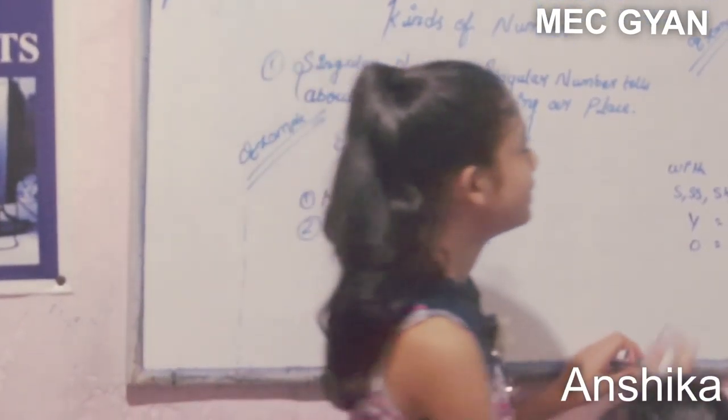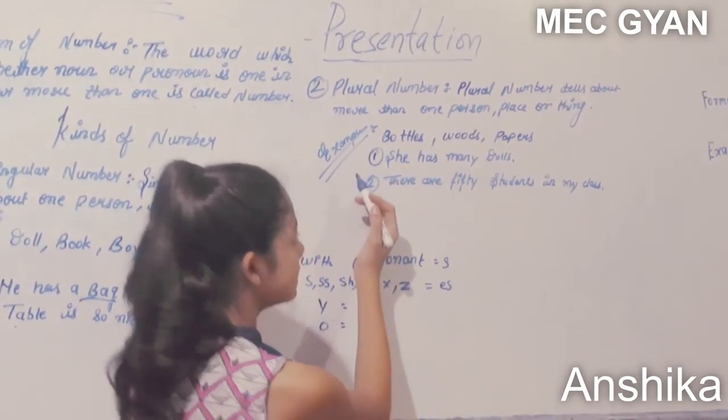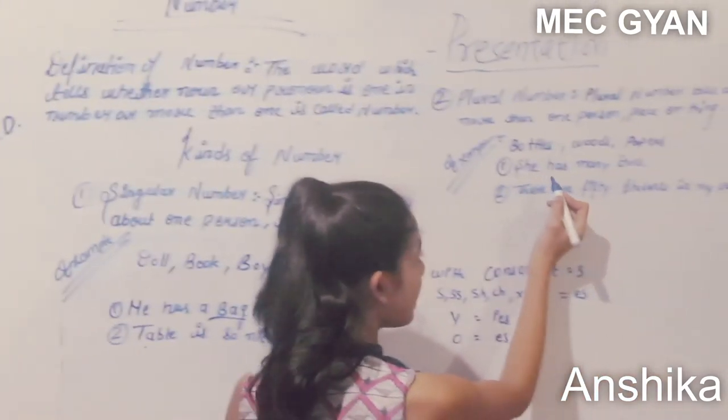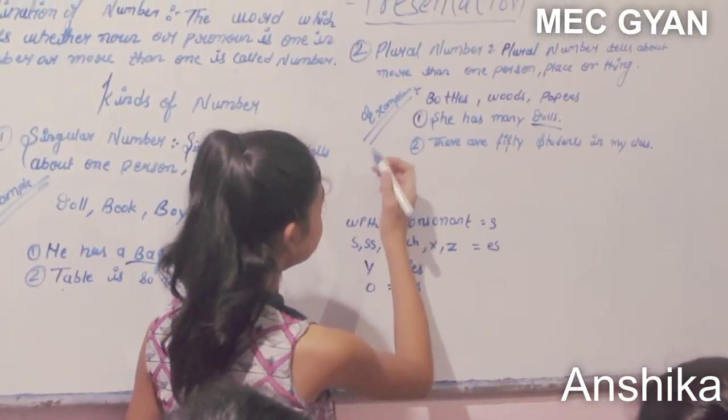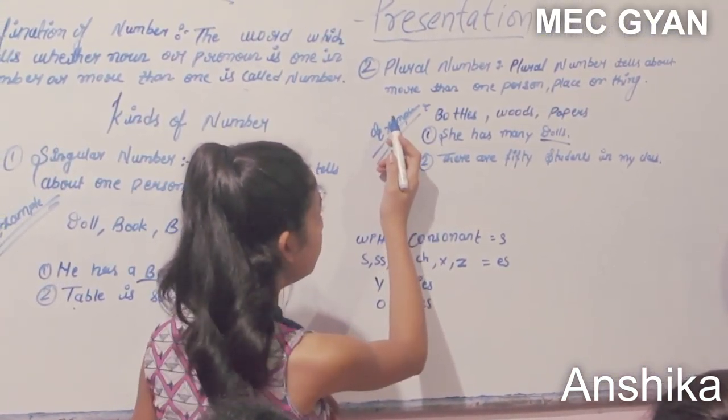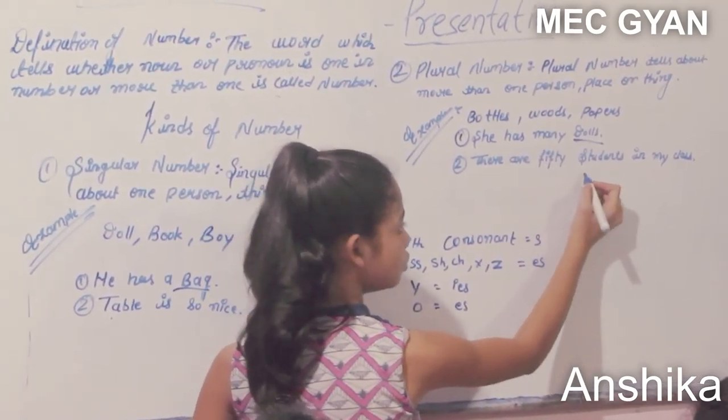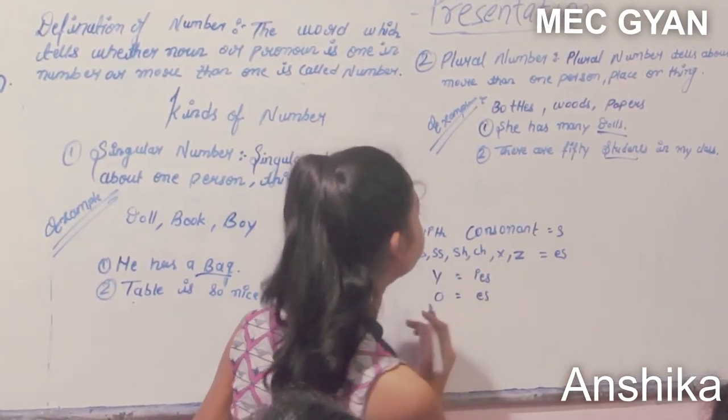Plural number: Plural number tells about more than one person, place, or thing. Examples: bottles, wood, paper. She has many dolls. Here, dolls are plural. There are 50 students in my class. Here, students is plural.